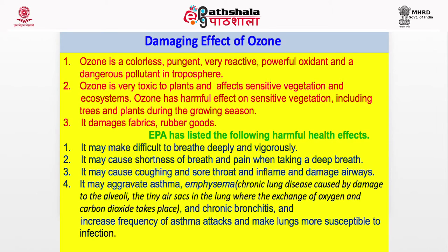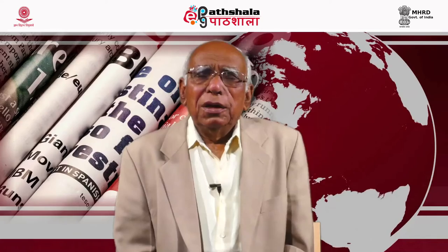Ozone is very important in tropospheric chemistry as in stratospheric chemistry, but here in tropospheric chemistry it is a pollutant. It is colorless, pungent, very reactive, a powerful oxidant, and a dangerous pollutant in the troposphere. Ozone is very toxic to plants and affects sensitive vegetation and ecosystems. It has a harmful effect on sensitive vegetation including trees and plants during the growing season. It damages fabrics and rubber goods. The EPA (Environmental Protection Agency of the USA) has listed the following harmful health effects of ozone: it makes it difficult to breathe deeply and vigorously; it causes shortness of breath and pain when taking a deep breath; it causes coughing and sore throat and inflames and damages airways; it aggravates asthma and chronic bronchitis, increases frequency of asthma attacks, and makes lungs more susceptible to infection.